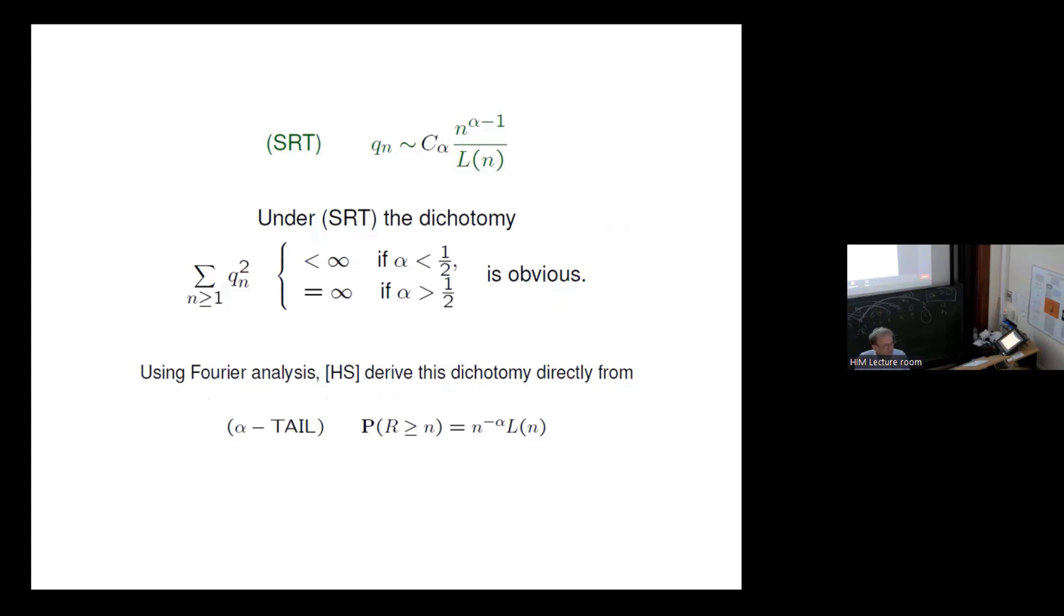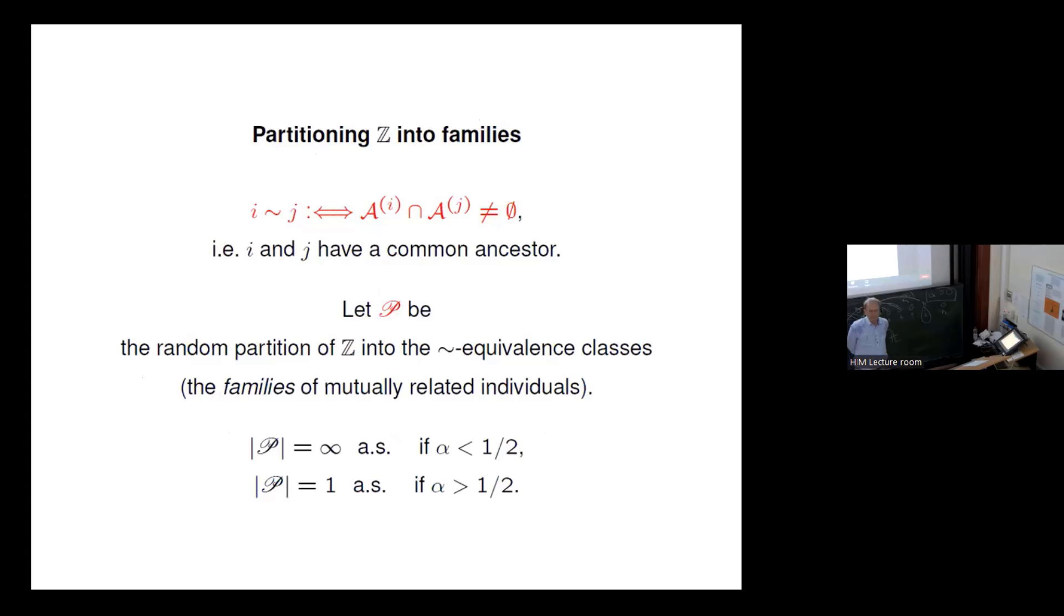Now, Hammond and Sheffield, they did not discuss this. It was pre that thing, and they also did not look into the genealogy so much. They did what we will then call a coloring of the families. And they used Fourier analysis and derived this dichotomy from generating functions and from Tauberian analysis without SRT. So that's nice to know. Okay, now, having this concept of the genealogy of theorem, we can now...